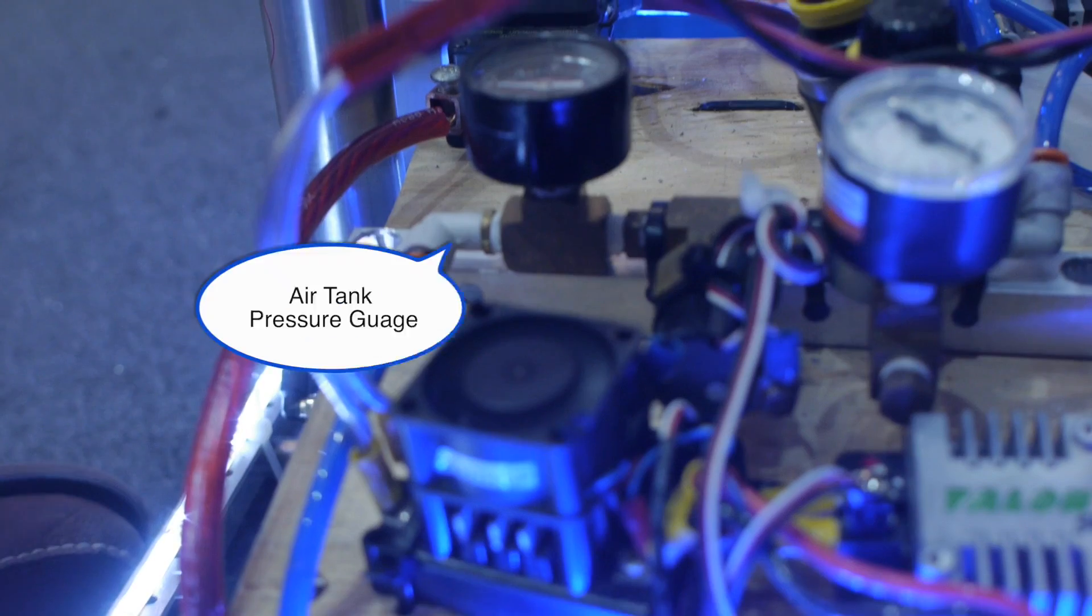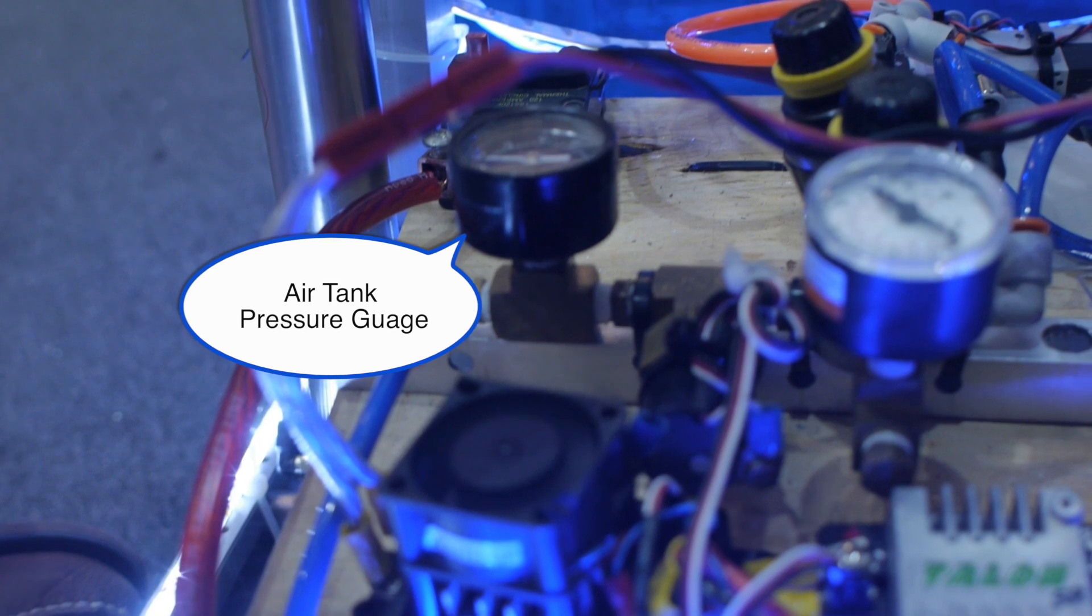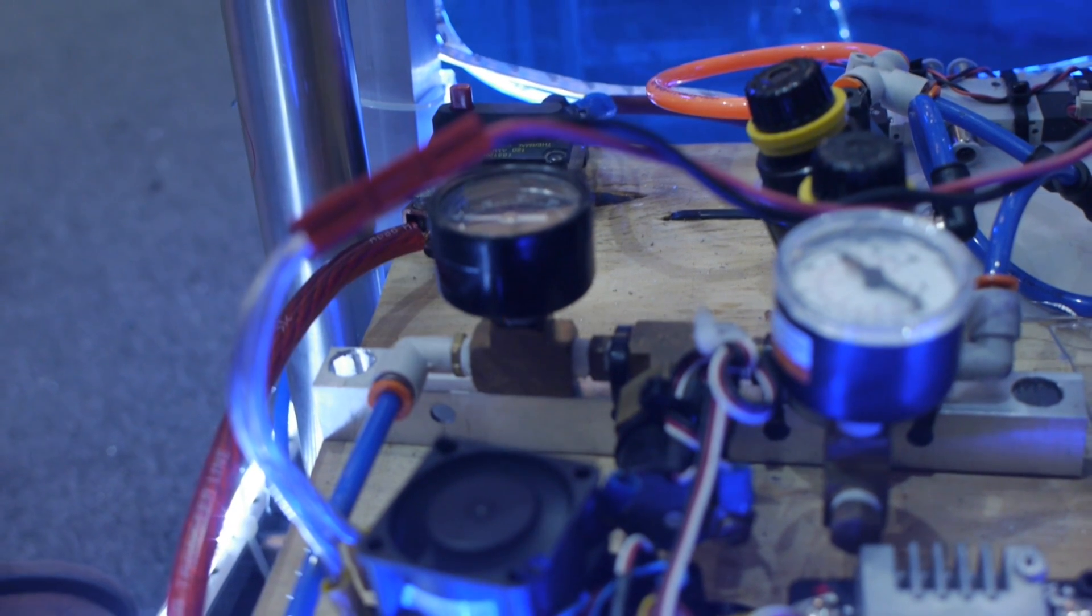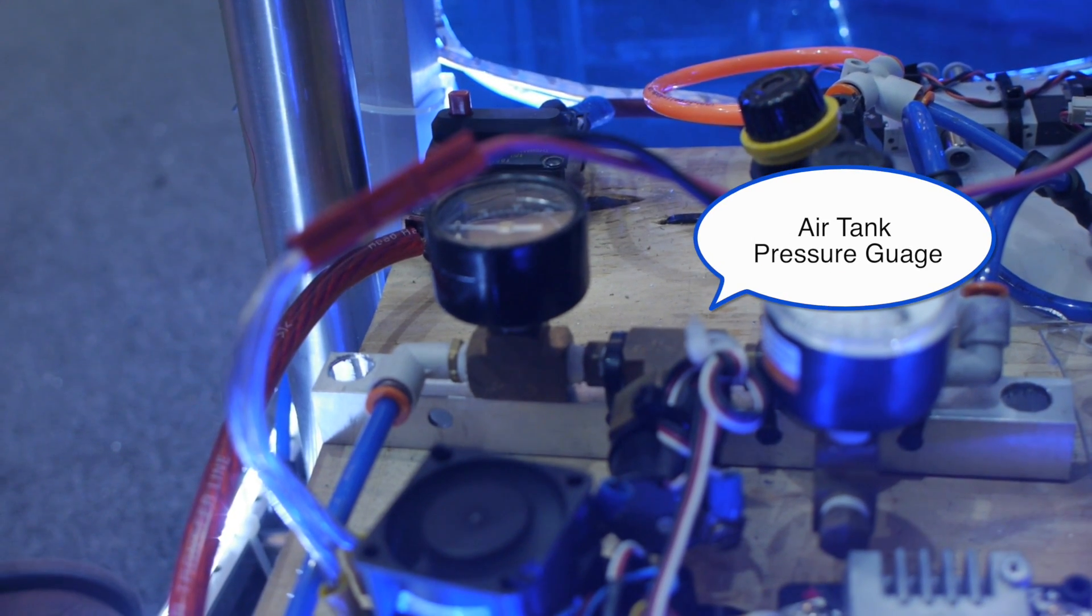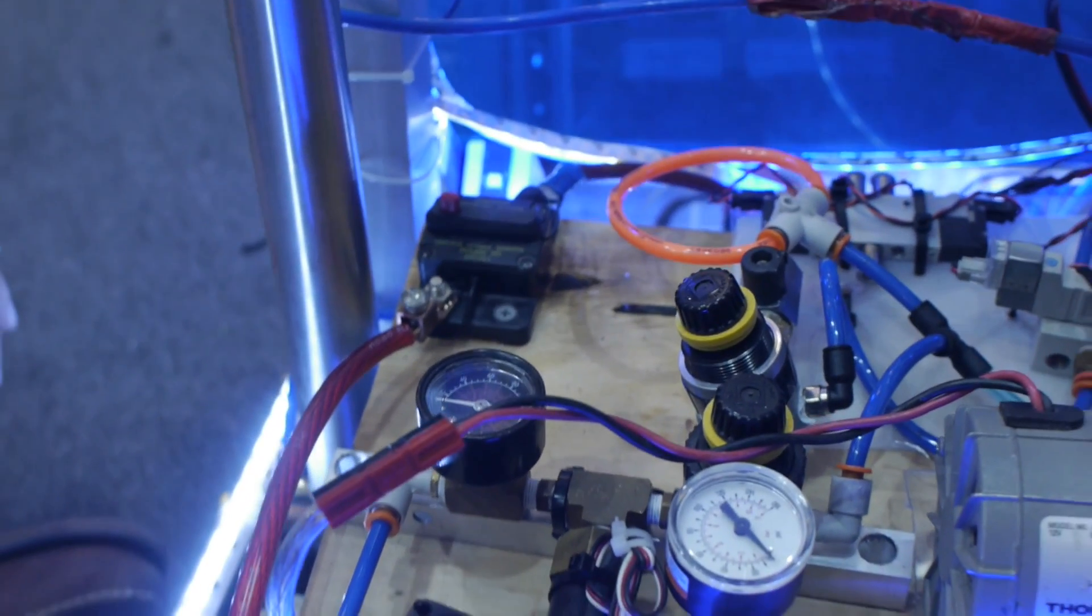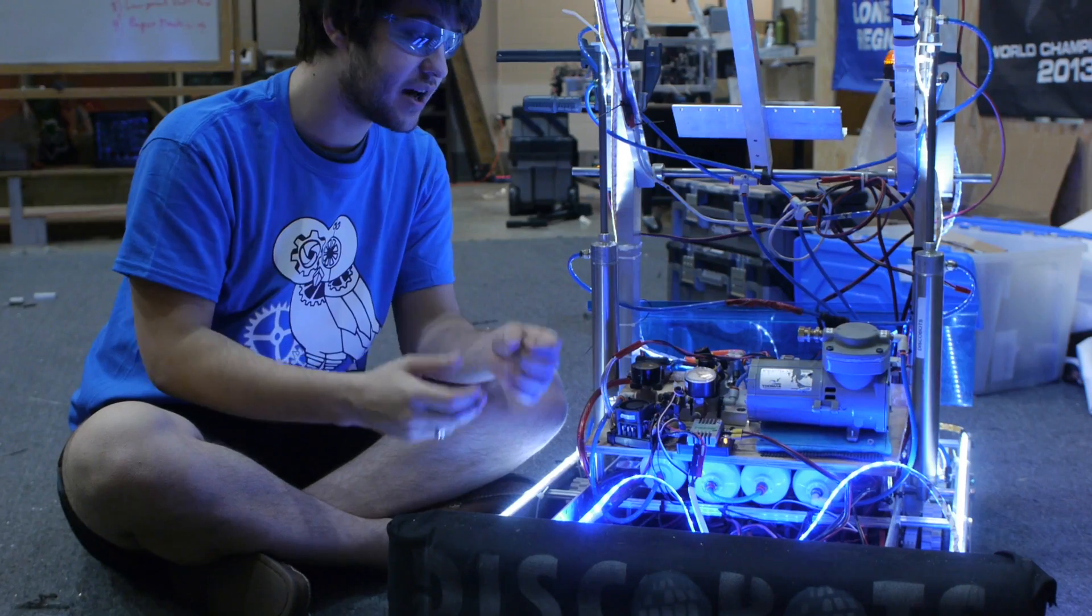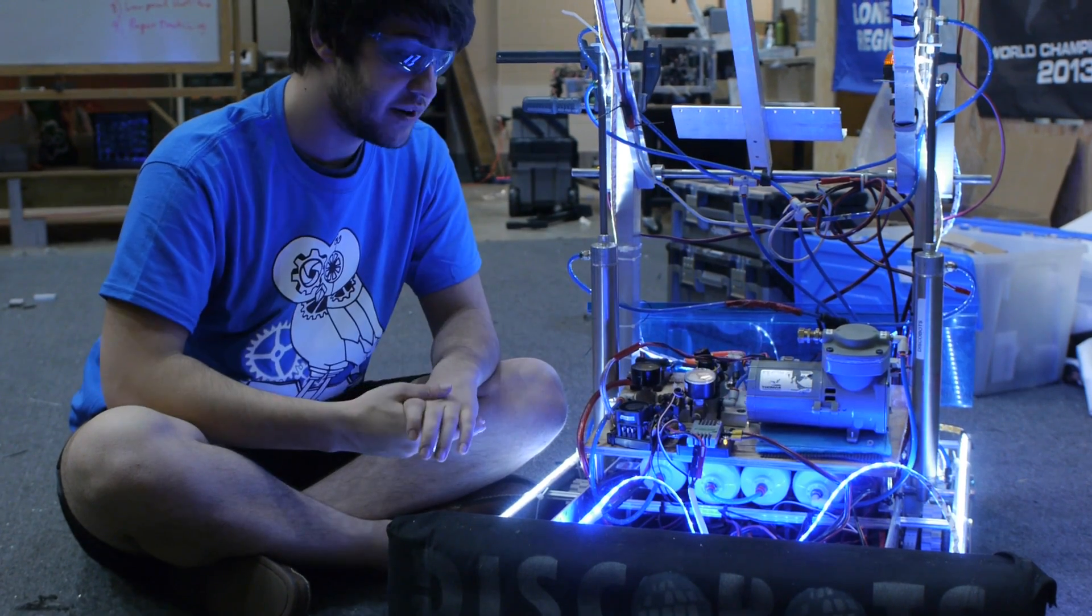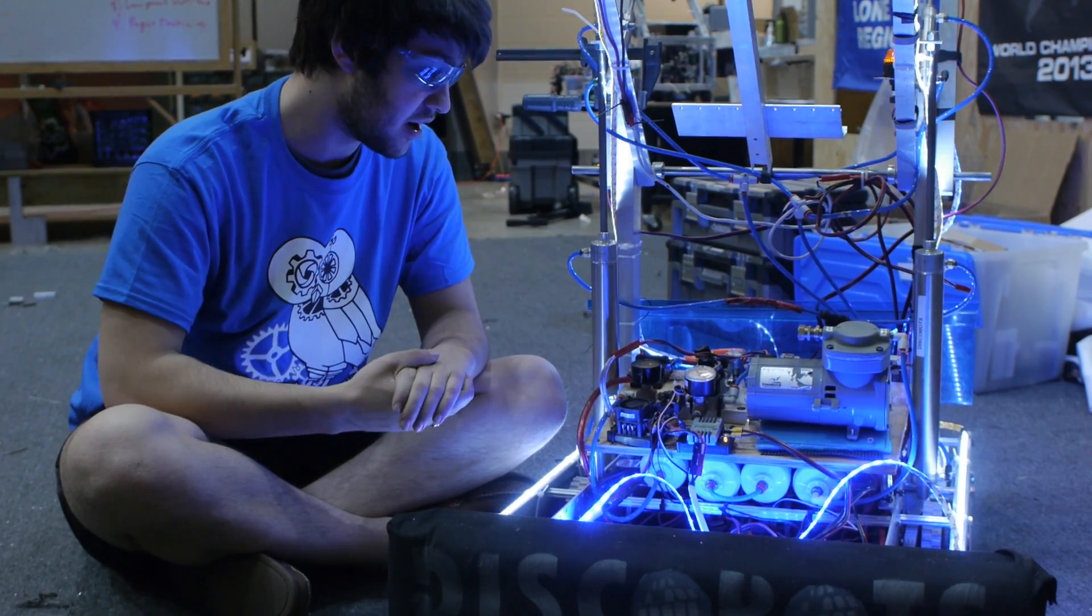From the tanks, the air flows into this gauge where you can read the air pressure of the tanks. From that, it flows into the sensor which regulates the compressor. If the air in the tanks is under 120 psi, it turns the compressor on. If it is at 120 psi, it turns the compressor off.